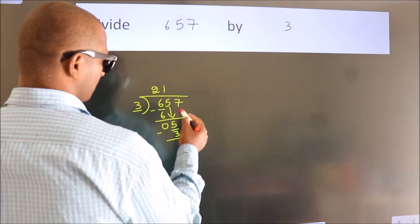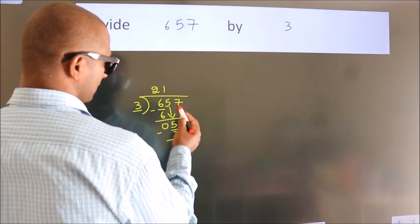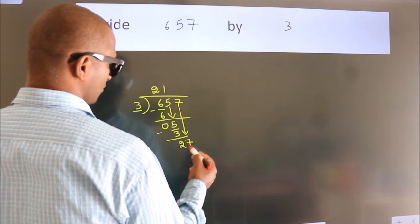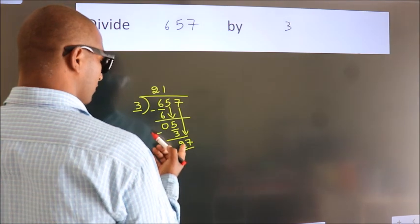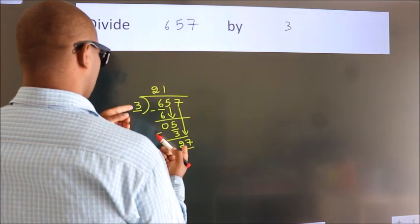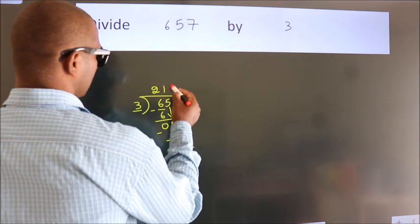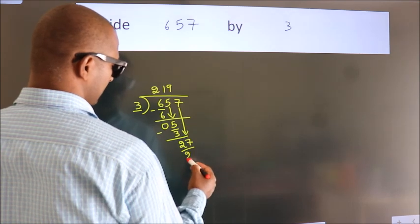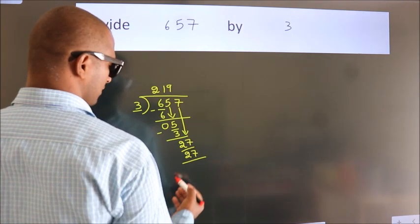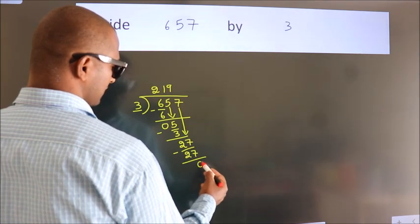After this, bring down the beside number, so 7 down, so 27. When do we get 27? In the 3 table, 3 times 9 is 27. Now we subtract, we get 0.